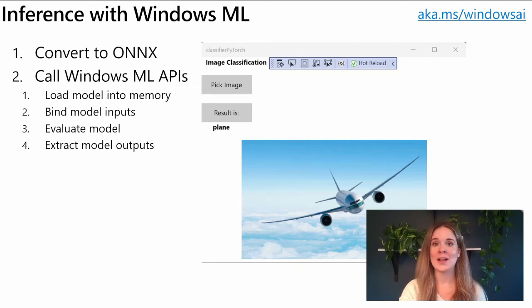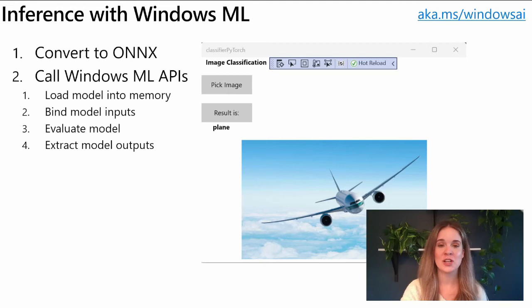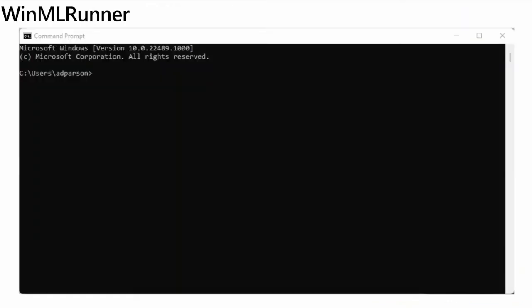We have a variety of inferencing samples from image classification to object detection to tabular data analysis, so I encourage you to check it out. Along with ONNX converter tools, we also have a WinML Runner tool, which is a standalone command-line tool making it easy to test loading, binding, and evaluating your model. This is great when iterating on trained models or testing out various hardware configurations — you don't have to build an app to see if your ONNX model will work with Windows ML and DirectML. You can download WinML Runner on the Windows Machine Learning GitHub.